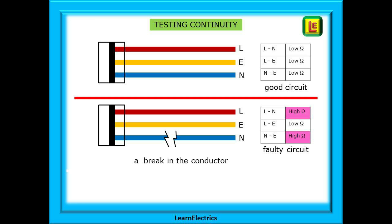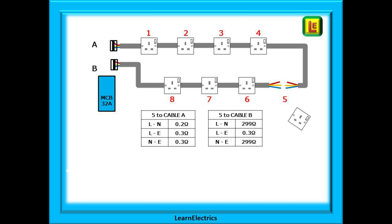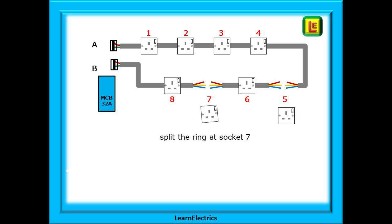So let's test the ring circuit then. At socket five, test between each pair of conductors that go back to cable A: live to neutral, live to earth, and neutral to earth. As you can see, they are all low ohms. We can assume therefore that the fault is not between socket five and cable A in the consumer unit, and that is half the circuit eliminated straight away. Now test pairs of cables between socket five and cable B in the consumer unit: live to neutral, live to earth, and then neutral to earth. As you can see on this little chart, any test that includes neutral gives a high ohms or open circuit reading. The fault is between socket five and cable B in the consumer unit, and we're on our way to finding the problem.